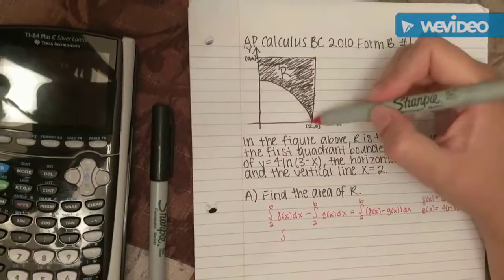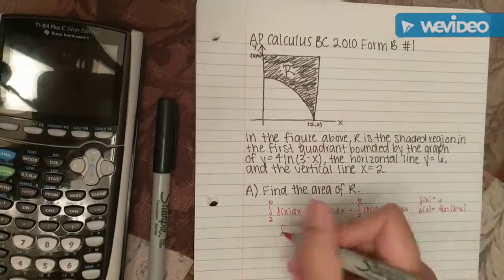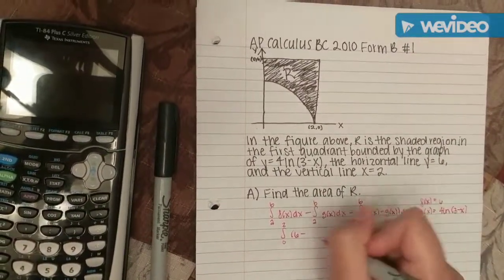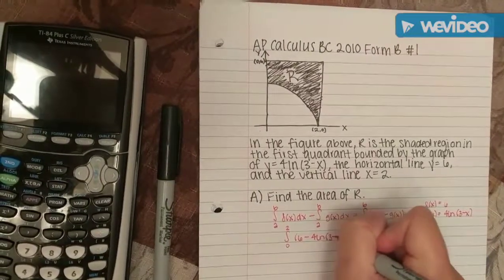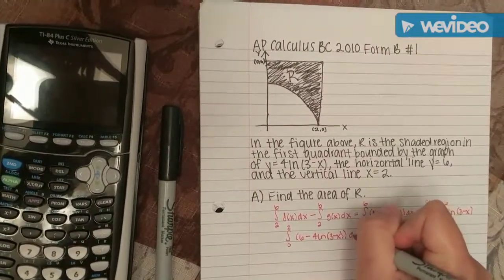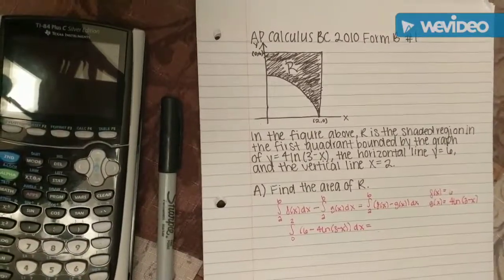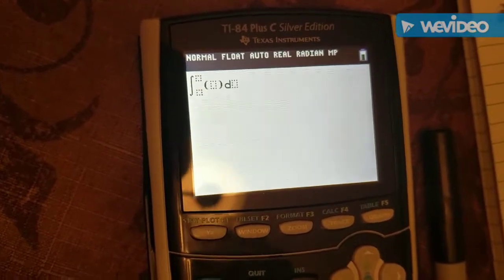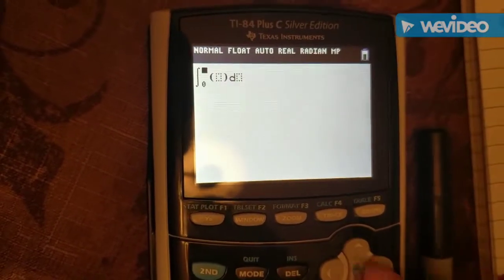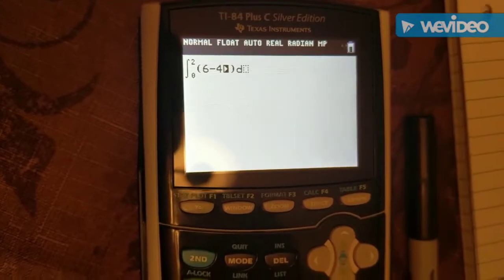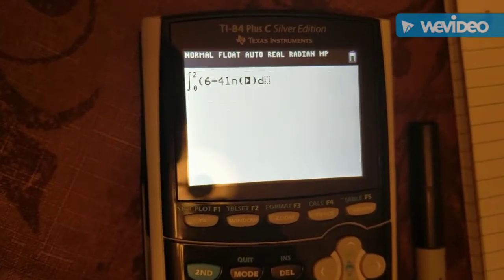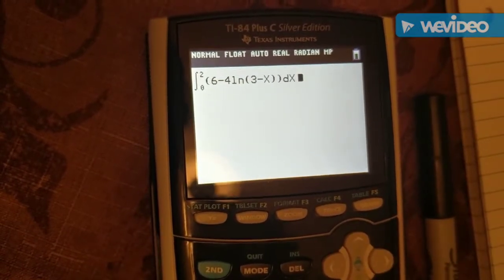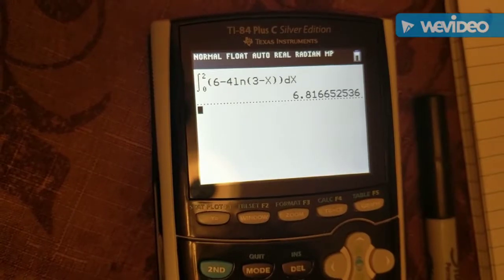Which would be the integral from 0 to 2, because these are the x values, of 6 minus 4 natural log of 3 minus x dx. You would just plug that into the calculator. In the calculator, you go to math 9, which gives you the integral, and you just plug everything in. 6 minus 4 natural log of 3 minus x. Close all your parentheses. The answer is 6.817.